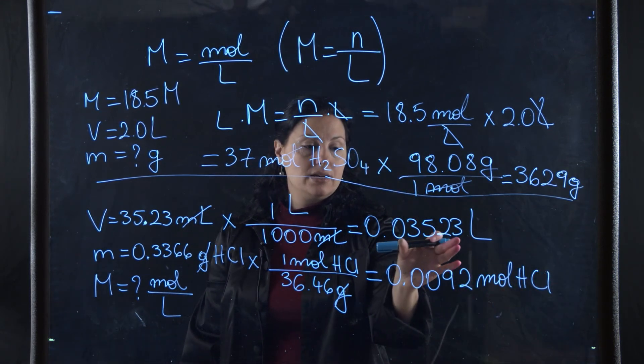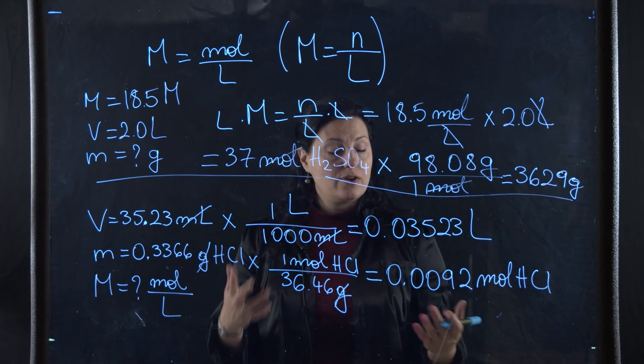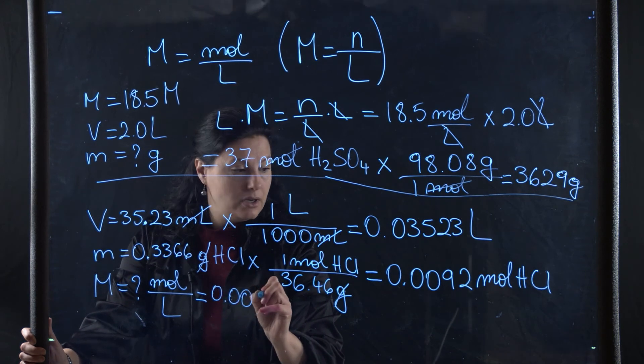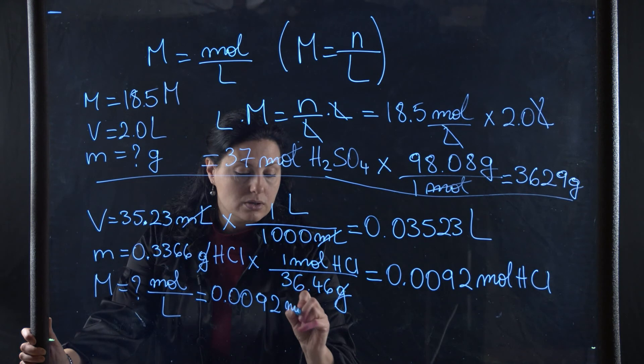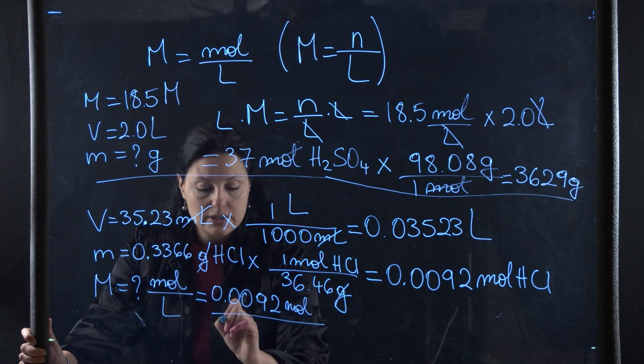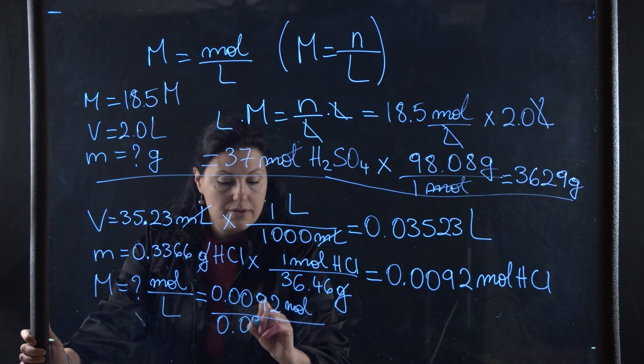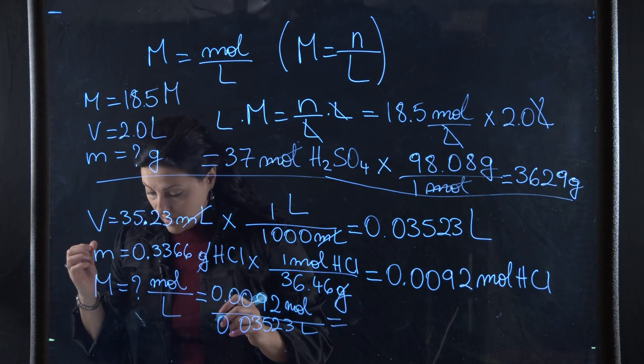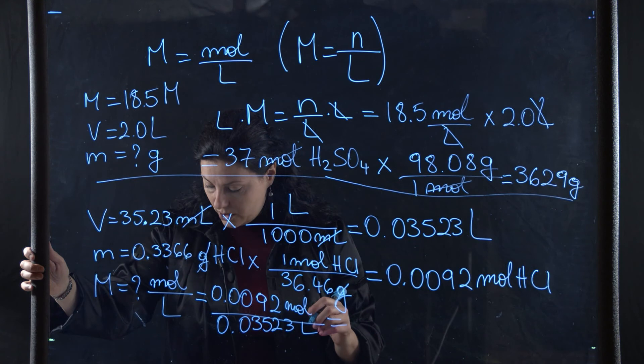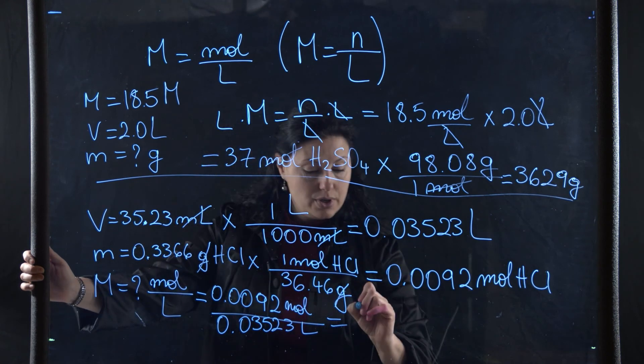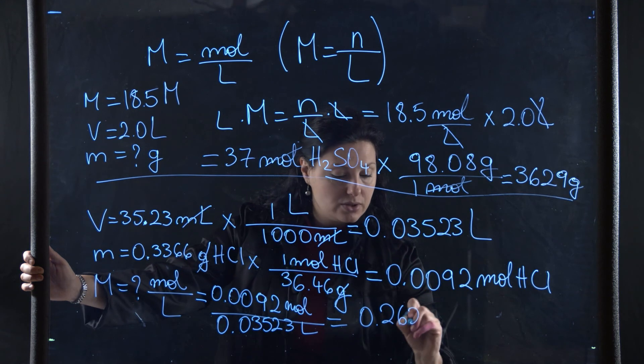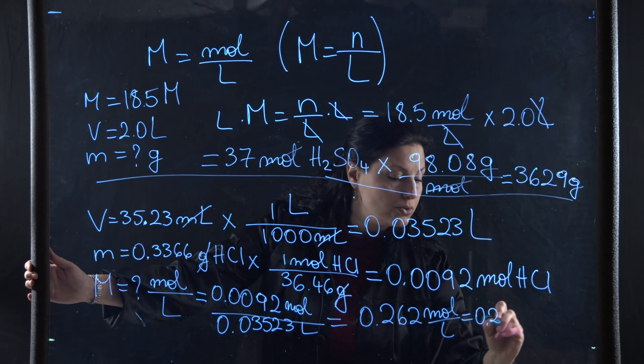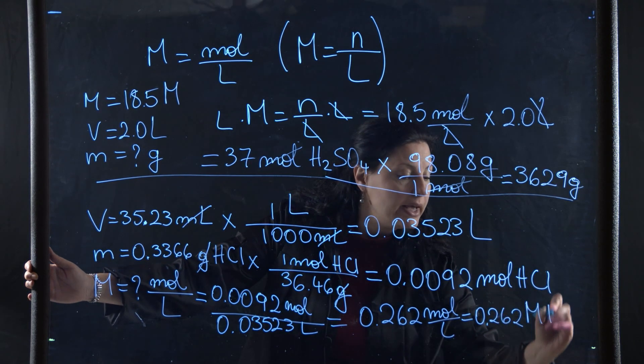Now that I have an amount of moles and an amount in liters, I can figure out the molarity. I have 0.0092 moles divided by the amount in liters, 0.03523 liters, and this should give me 0.262 molar HCl.